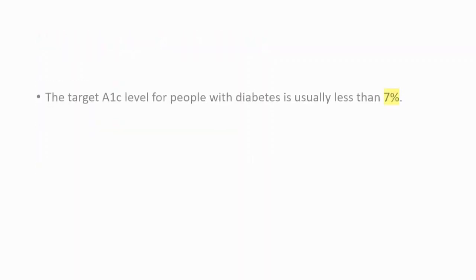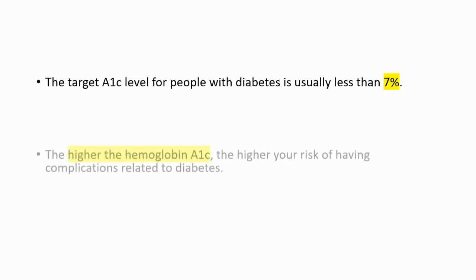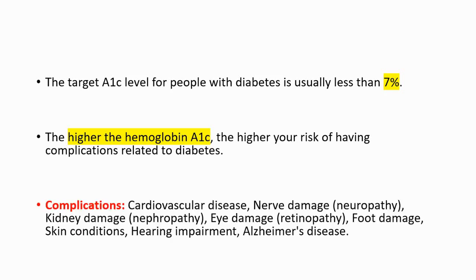The target hemoglobin A1C level for people with diabetes is usually less than 7%. The higher your hemoglobin A1C, the higher the risk of having complications related to diabetes.